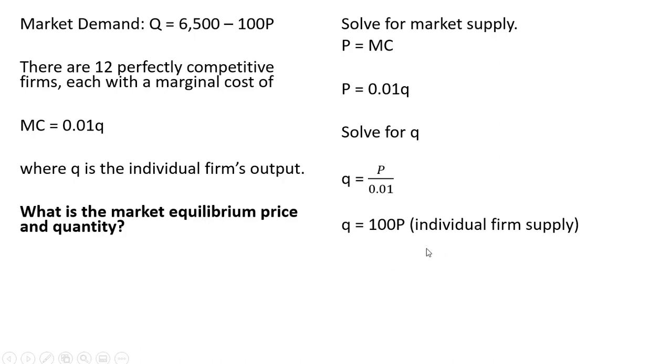Now to get the market supply equation, we have 12 firms just like this one. So the market supply is going to be 12 times the individual firm supply, where lowercase q is 100P. So 12 times 100P. That is the market supply equation.